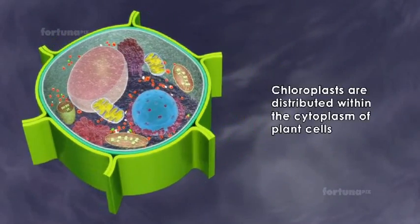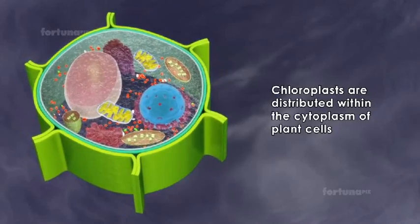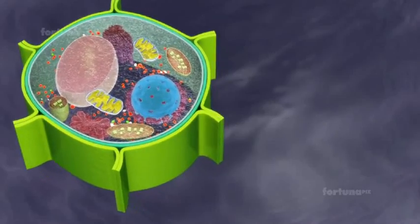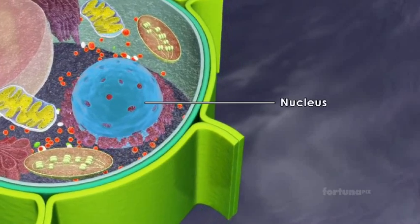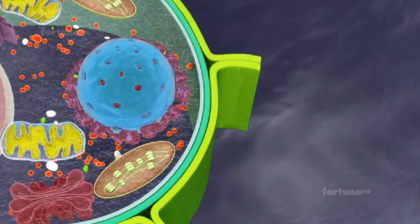Chloroplasts are distributed within the cytoplasm of plant cells. In some cells, they are concentrated around the nucleus or just beneath the cell wall.